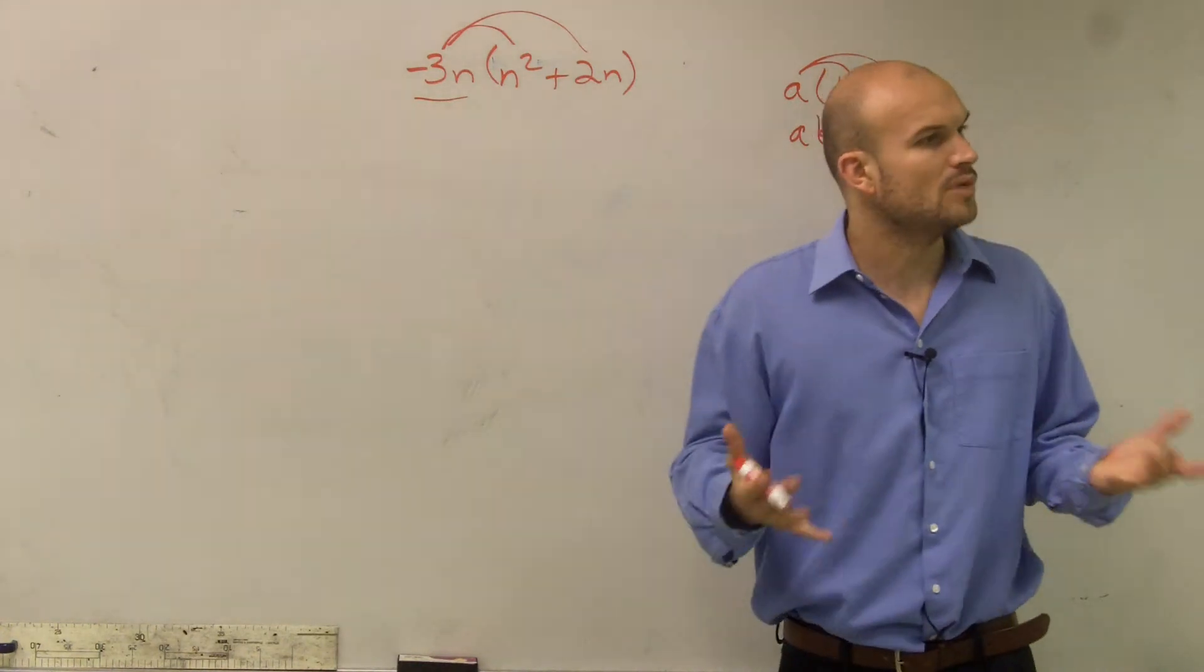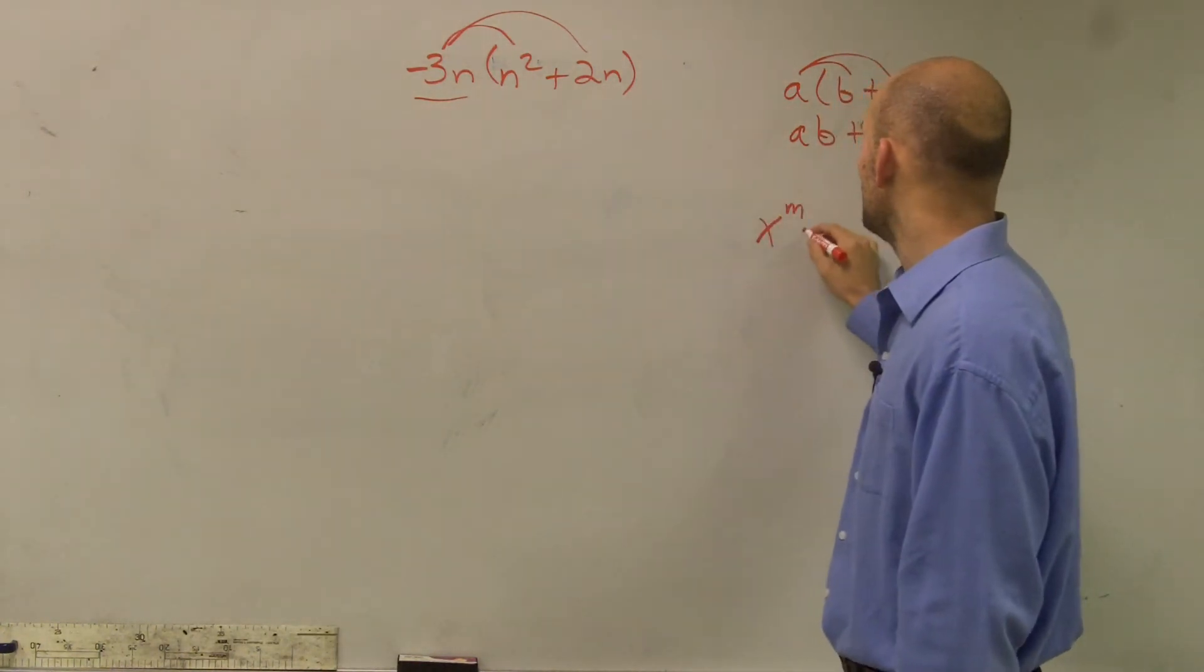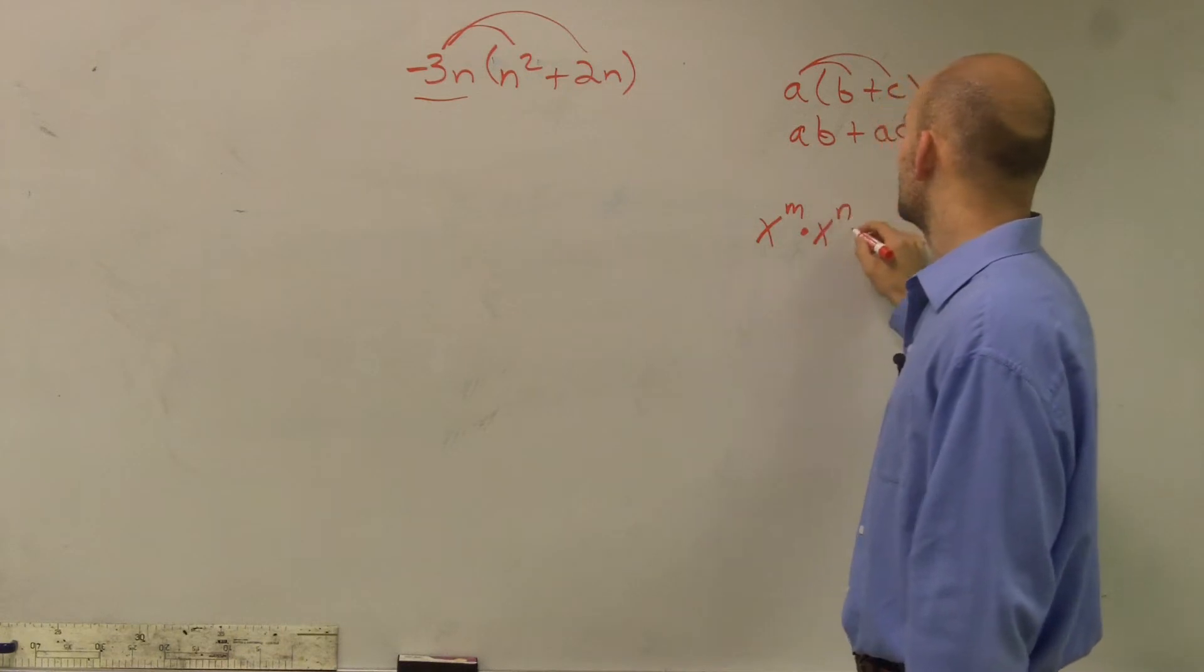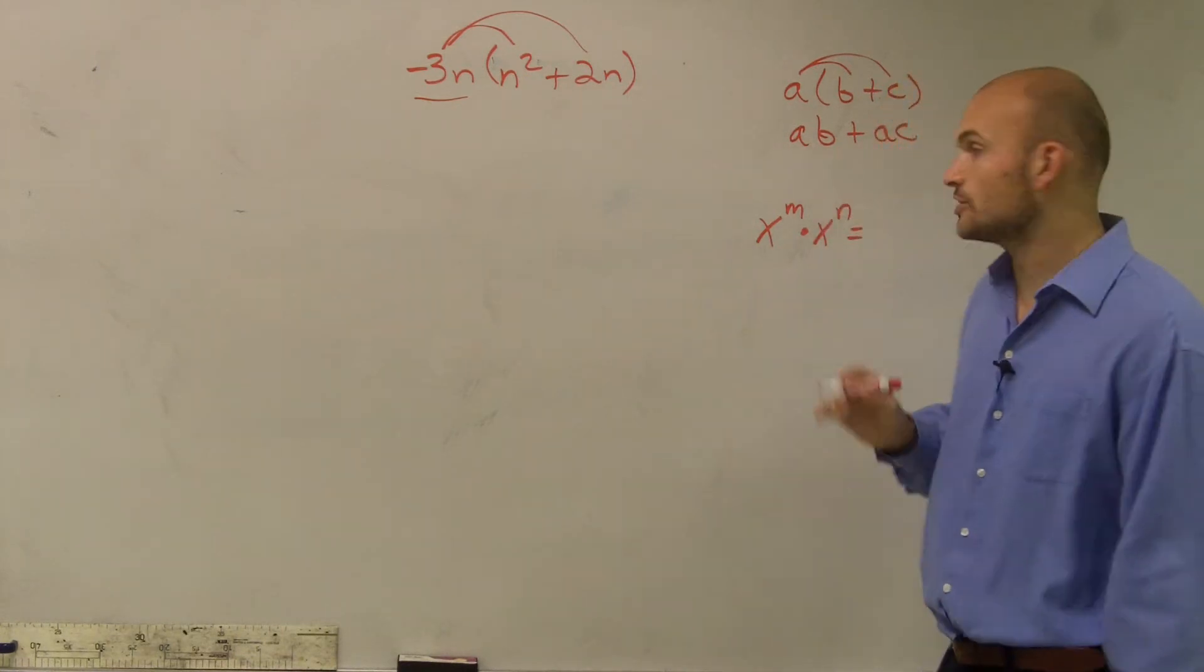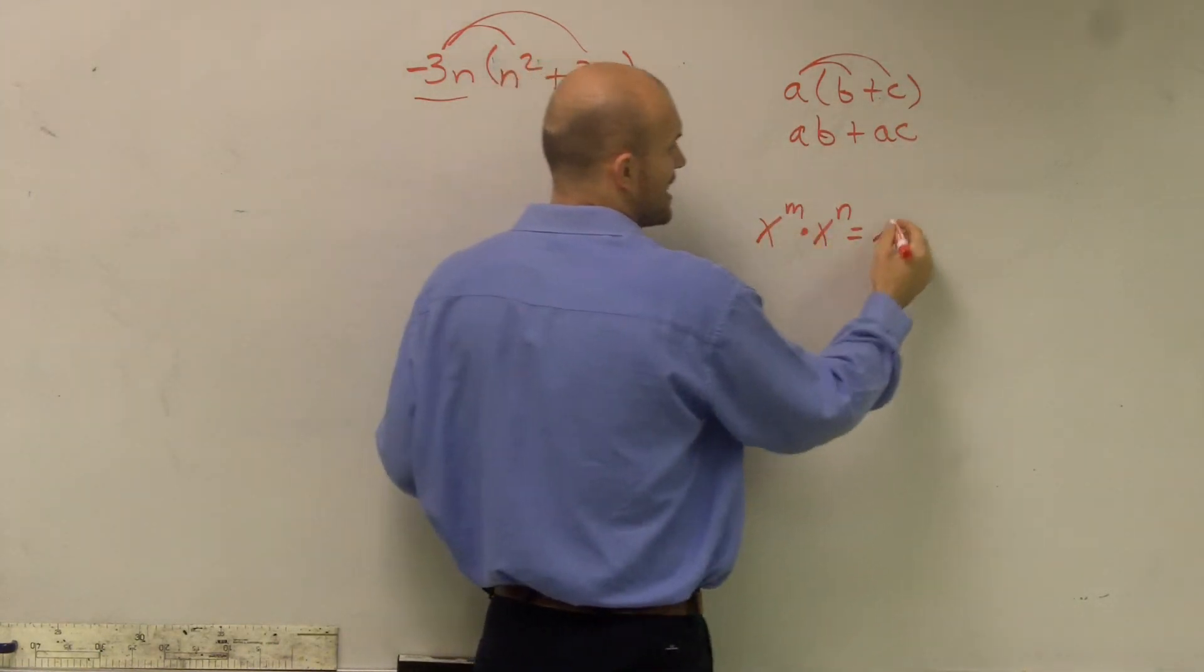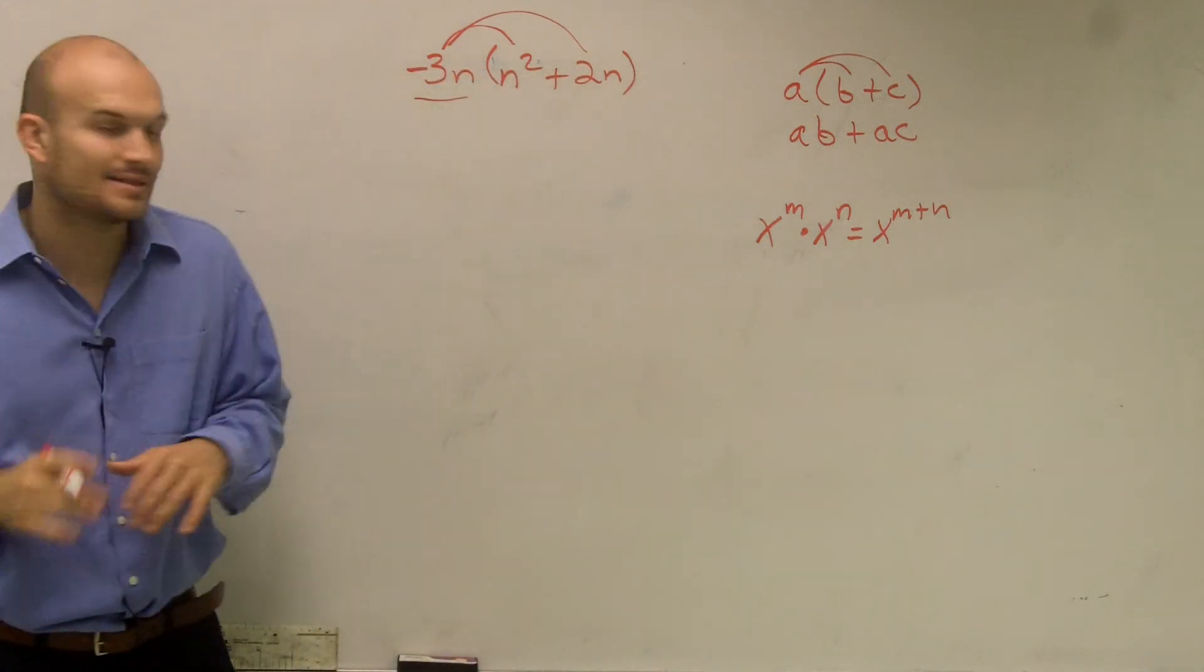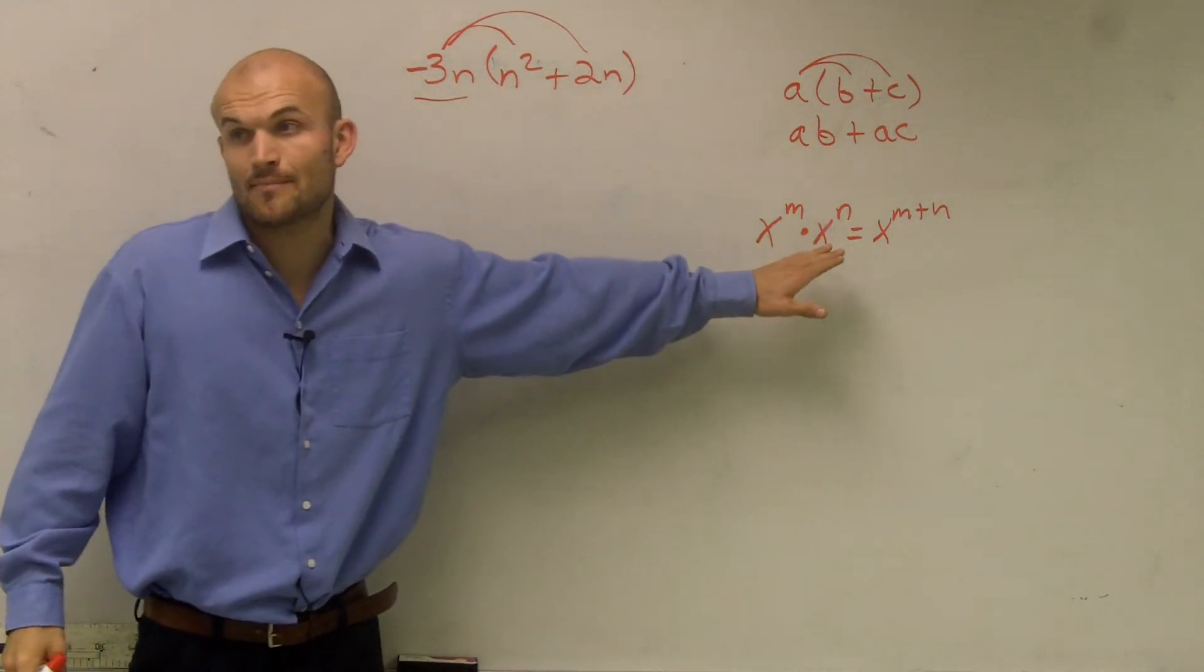So I need to remember, again, how do we multiply monomials, right? Or what is kind of the rule? Remember, when you multiply two monomials, you're going to make sure you add their exponents. So if I have x to the n times x to the m, that means you add the exponents only when they have the same base. Yes?